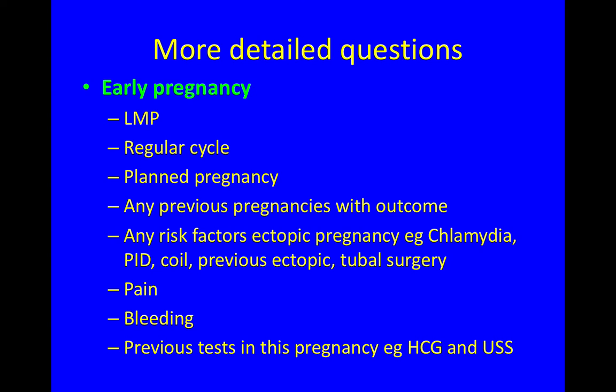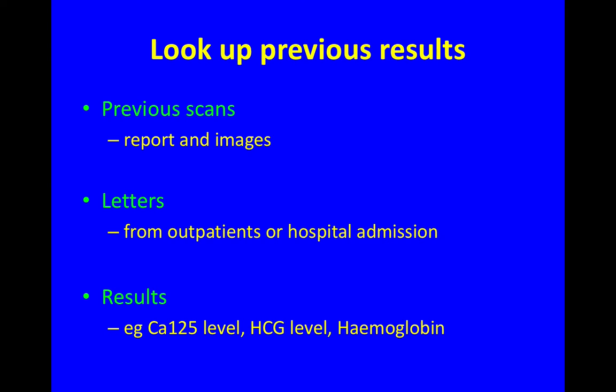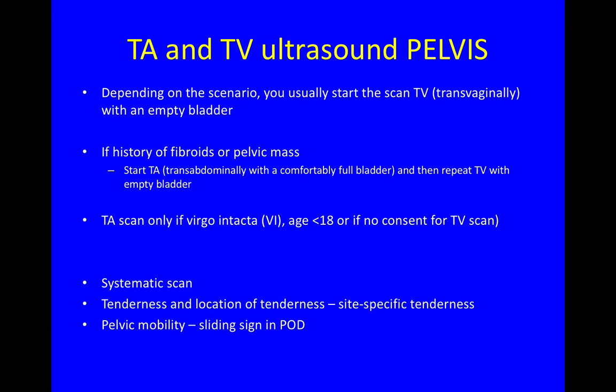Have you got pain or bleeding? Are there any previous tests in this pregnancy, like an HCG level or an ultrasound? Then look up the previous results — look at previous scans, both the report and images. Look up letters from outpatients or hospital admissions. And look up results such as CA125 level, HCG, and haemoglobin, depending on the scenario.